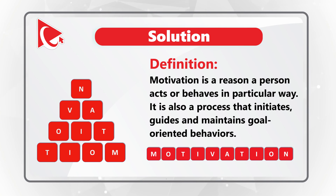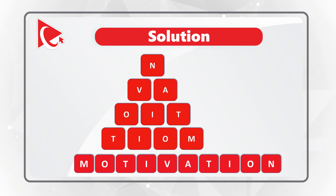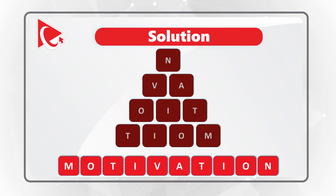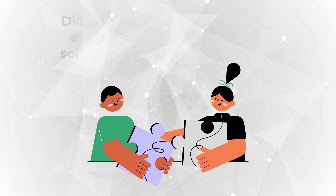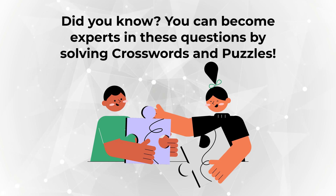Believe it or not, doing more practice exercises helps you get better with the skill of forming words. For example, if you start with the bottom right corner, you can form the word motivation. You see M-O, then you swap T-I, and then if you continue, you go V-A-T-I-O-N. You can solve these types of challenges better if you do more crosswords and puzzles.